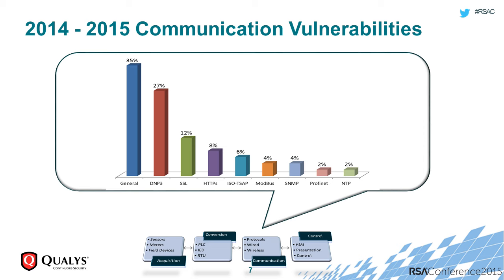The number one communication component we see is the DNP3 components, followed by SSL, HTTPS, and so on and so forth.